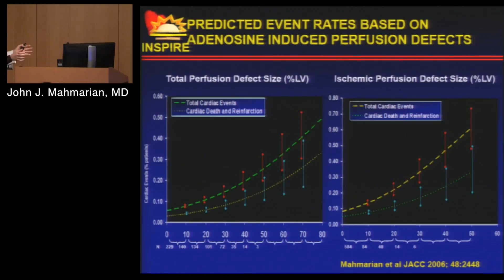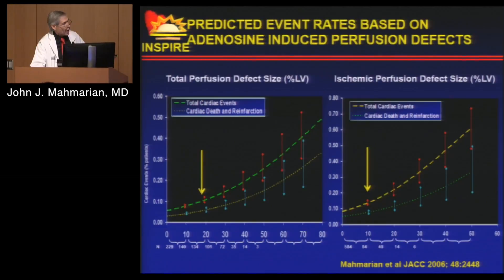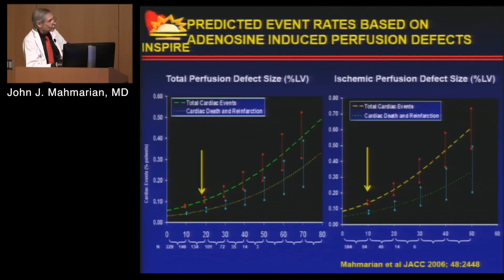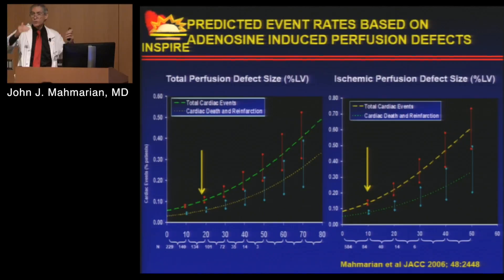It doesn't only depend on whether you have a defect, but the size of the defect — size does matter. Looking at total defect size anywhere from zero up to 80% of the myocardium, and ischemic defect size, data from the INSPIRE study shows that around 20% defect or less than 10% ischemia is a low risk study. But once defect size gets above 20% or 10% ischemia, risk increases exponentially. Someone with a 20% perfusion defect and 10% ischemia is very different than someone with a 50% defect and 40% ischemia — the second patient is much higher risk.